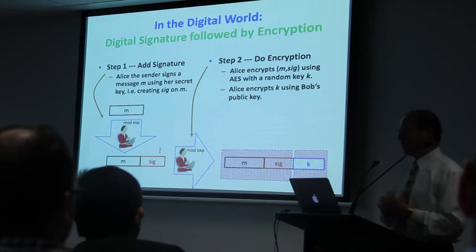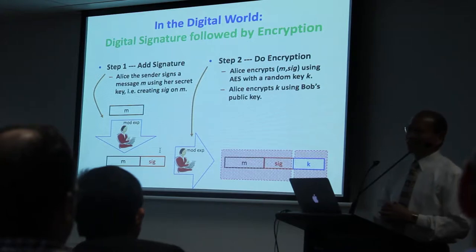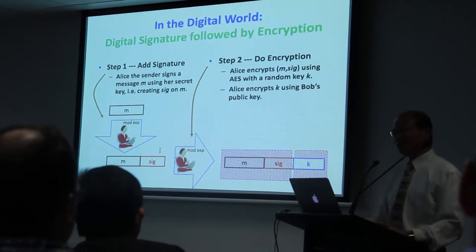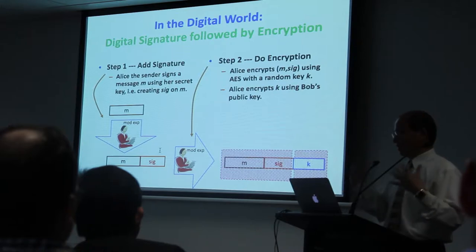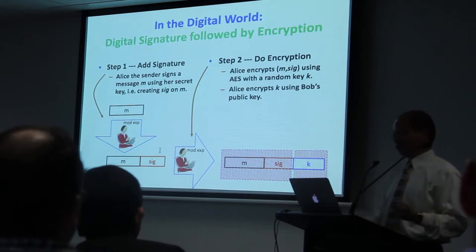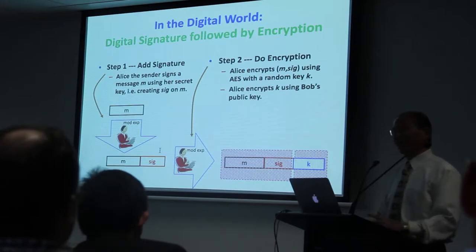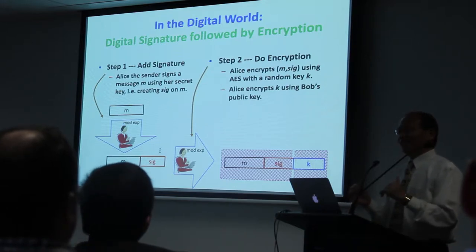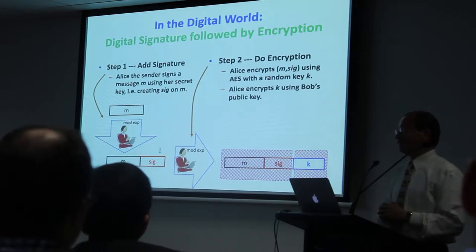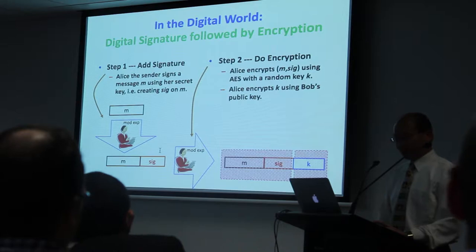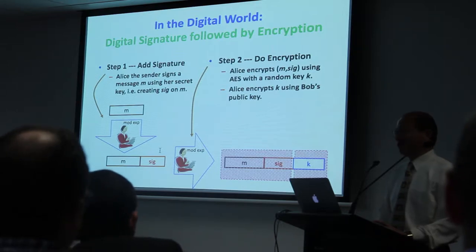It turns out in cyberspace, we've been doing this since the very beginning of modern data security, back from the mid-1970s — really the 80s, since the technology wasn't there in the 70s. We do something very similar in two steps: step one is to affix a digital signature to a digital document, and afterwards, we encrypt it. As it turns out, both steps are pretty time-consuming.